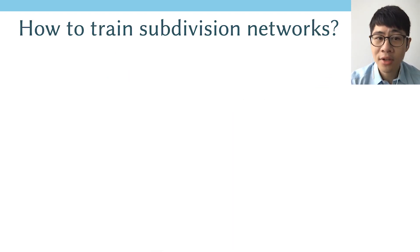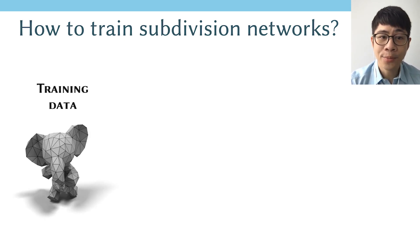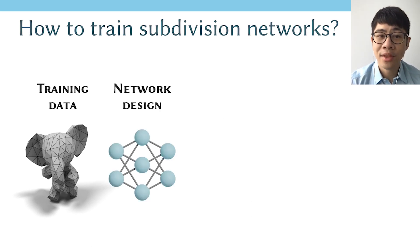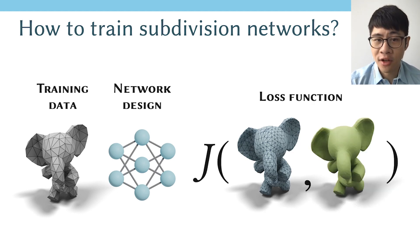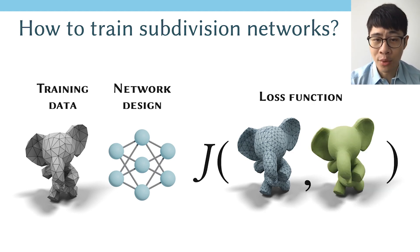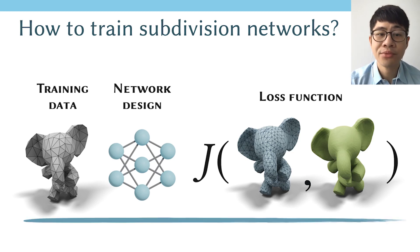How can we train such a subdivision network? This requires discussing the training data, the network design, and once we have an output, we need to define a loss function J that measures the quality of the output mesh. In this paper, we are going to address all of them.